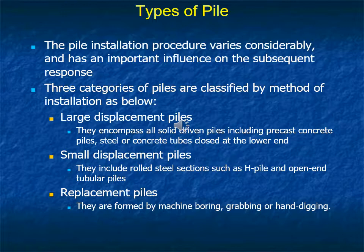Displacement piles displace the soil to the sides as they penetrate into the ground. Replacement piles are formed by machine boring, grabbing, or hand augering — the piles are constructed in a bore, meaning the soil is removed, a hole is made, reinforcement is placed, and then concrete is poured.